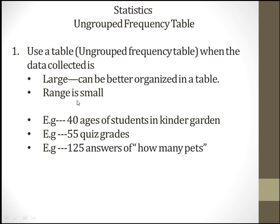Let's look at some examples. First: 40 ages of students in kindergarten. You may know that the age range for kindergarten students is maybe three, four, or five, up to six before they move on. The range is very small because the highest age might be six and the lowest three, so six minus three gives you three — a very small range.